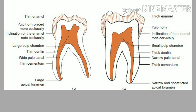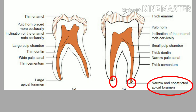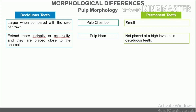Apical foramen. In deciduous teeth, the apical foramen is wide. In permanent teeth, the apical foramen is narrow and constricted.